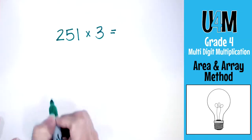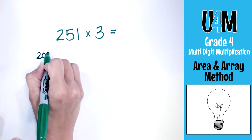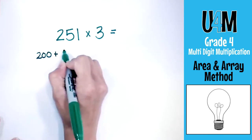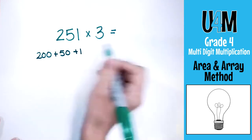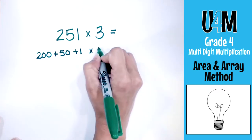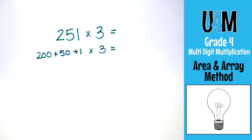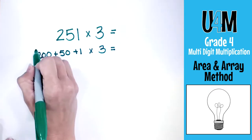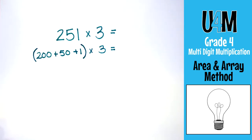So 251 is going to be broken down to 200 plus 50 plus 1, and you're going to multiply all of that times 3. I'm going to put a bracket around here to separate it — and now this is where the 'crazy' comes in.